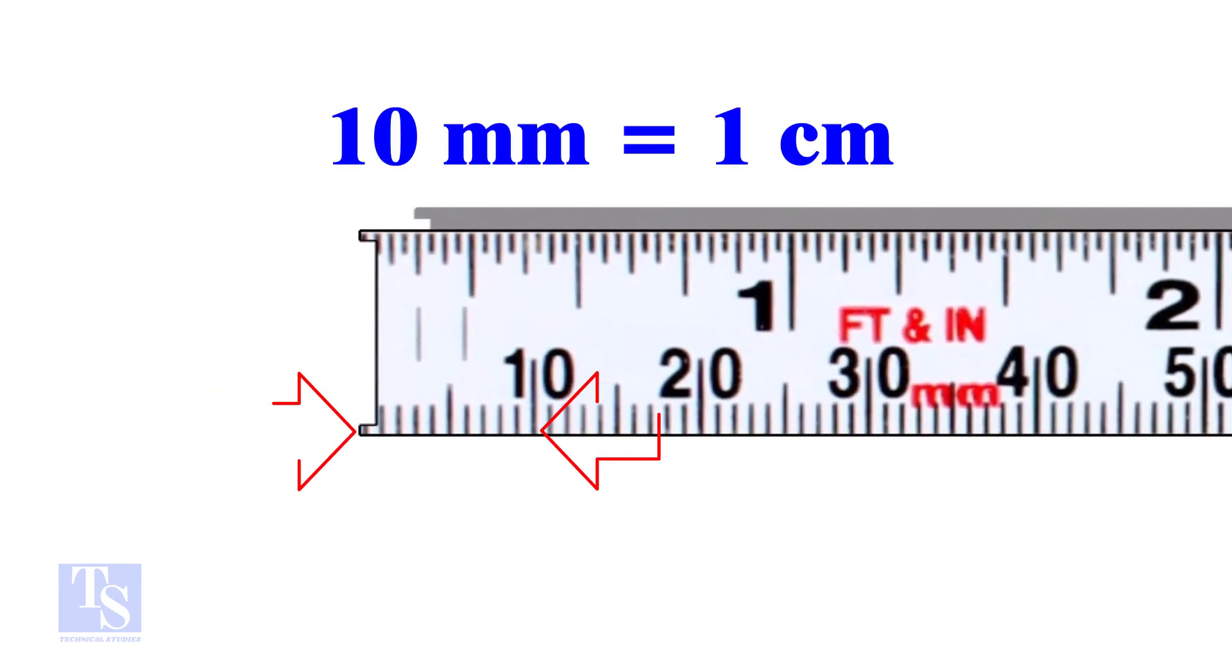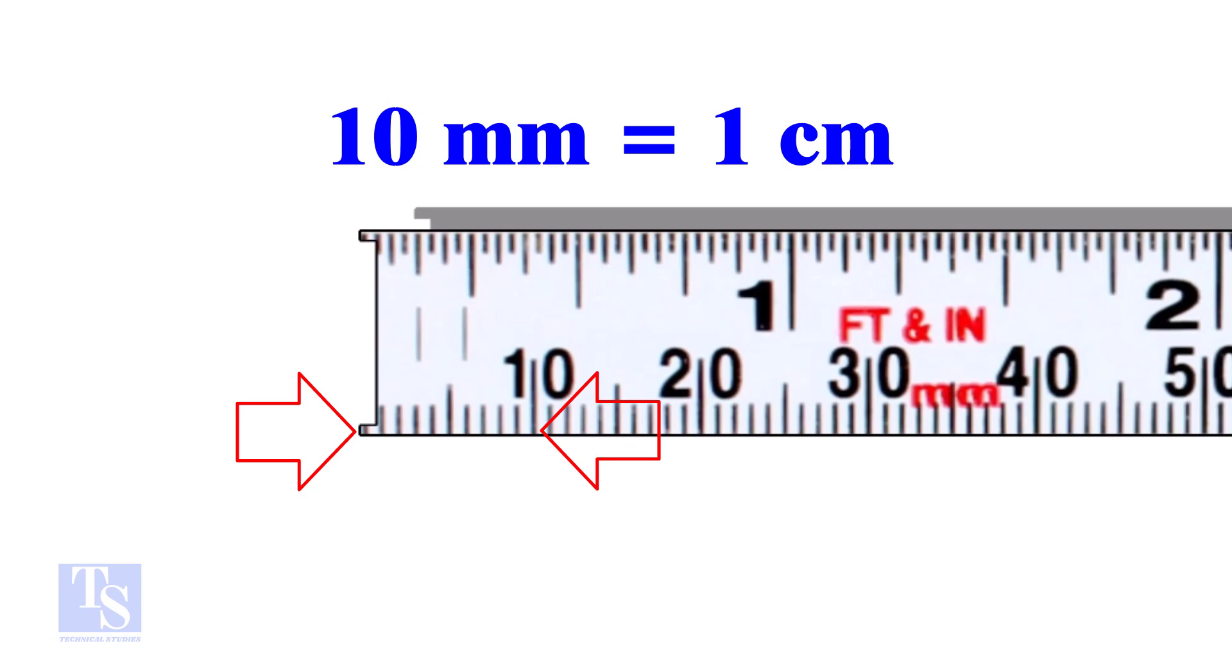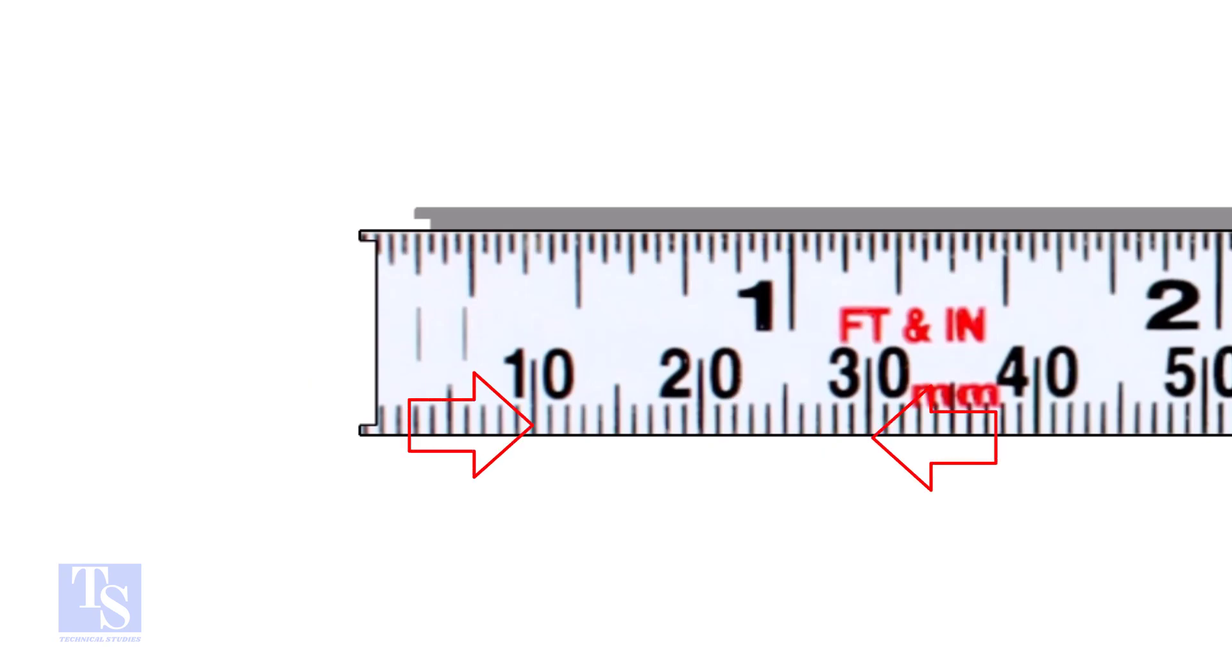From here to here, it is 10 millimeters or 1 centimeter. This is 20 millimeters or 2 centimeters. What is the distance from here to here? That is 30 minus 10 is equal to 20 millimeters.